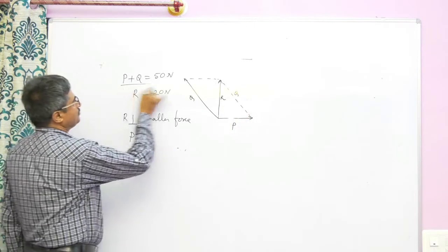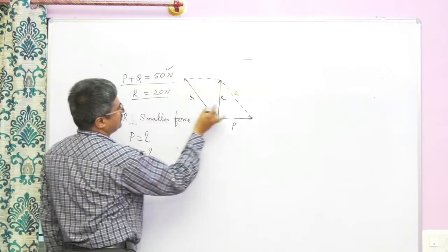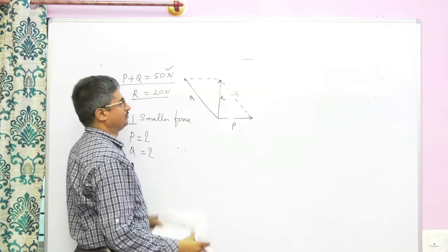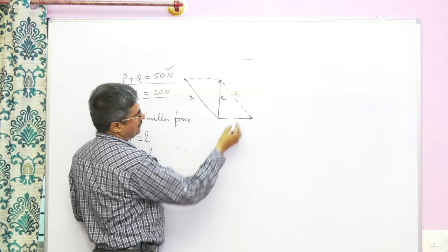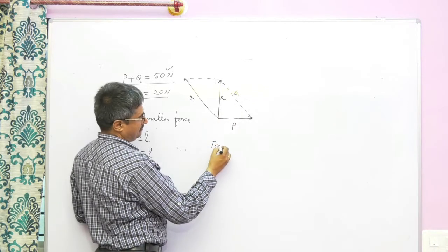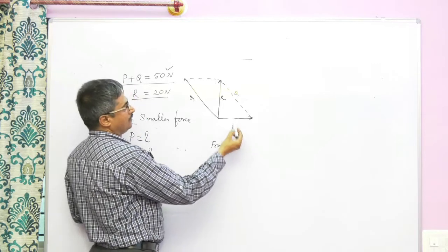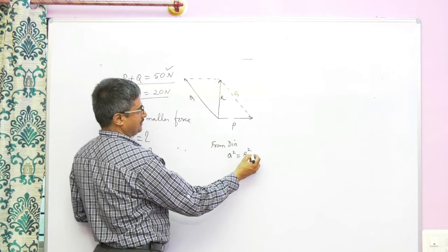P plus q given 50 Newton, magnitude of r is 20 given, so we have to find p and q. From this, from the diagram, q square equals r square plus p square.